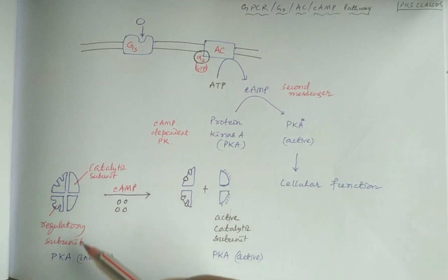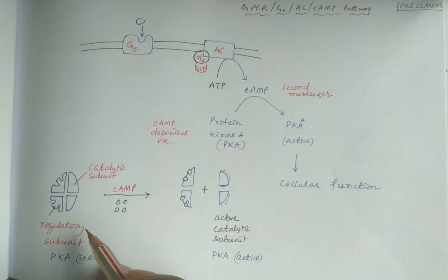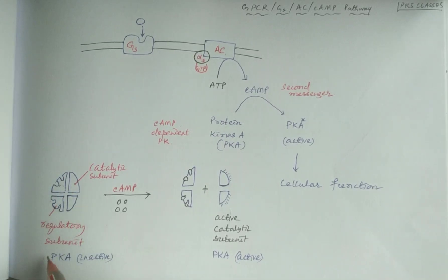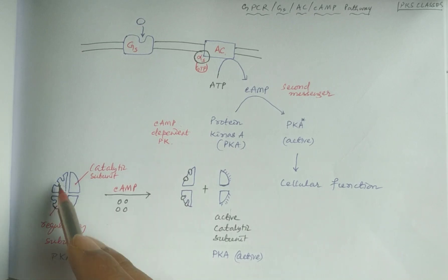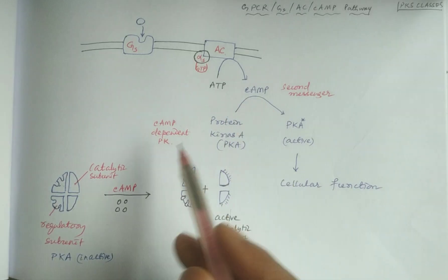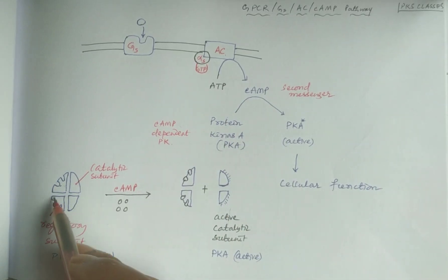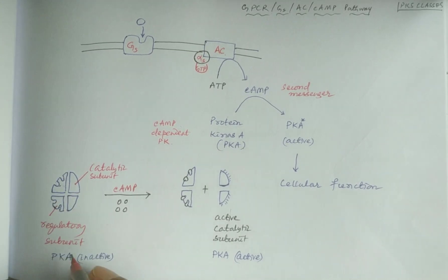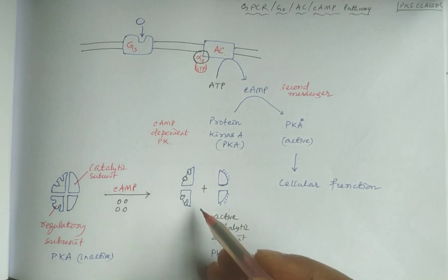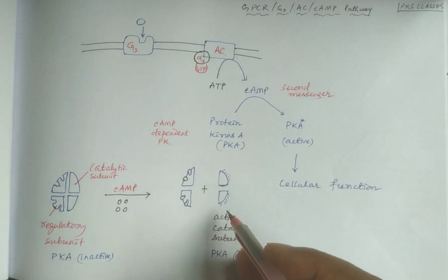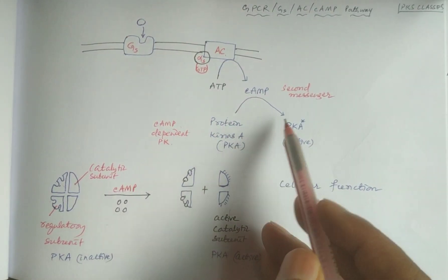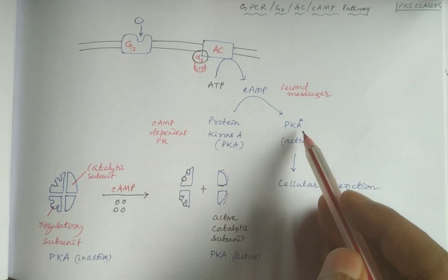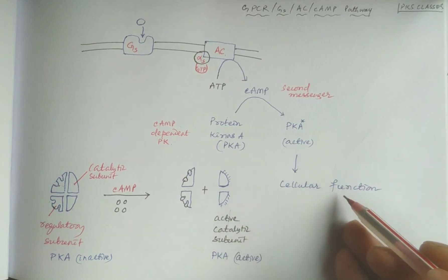Cyclic AMP binds to the regulatory subunit of the inactive protein kinase A. Protein kinase A, which is cyclic AMP-dependent, has four subunits: two regulatory subunits and two catalytic subunits. Four cyclic AMP molecules bind to the two regulatory subunits, releasing the active catalytic subunits, so cyclic AMP activates protein kinase A to show cellular functions.